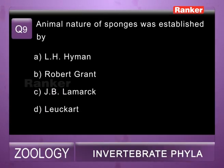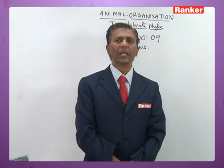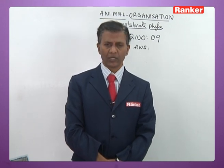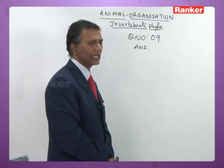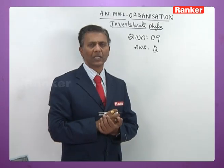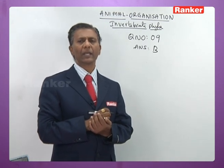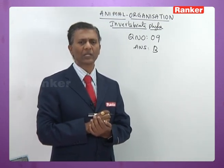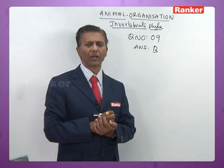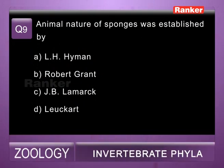Question number nine: animal nature of sponges was established by — a) L.H. Hyman, b) Robert Grant, c) Z.B. Lamarck, d) Lucard. Animal nature of sponges was established by Robert E. Grant. Sponges were discovered by Aristotle but the name 'sponges' was given by Robert Grant, who also established their animal nature. So ninth question correct answer is b.